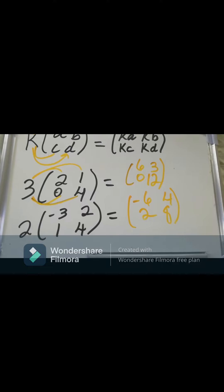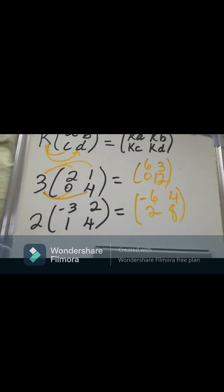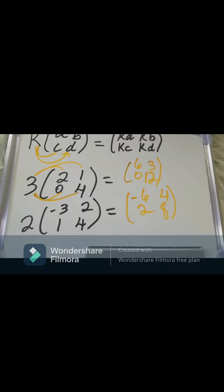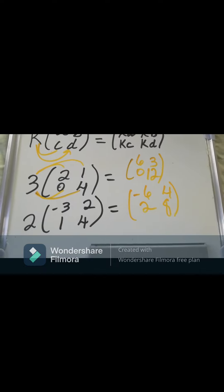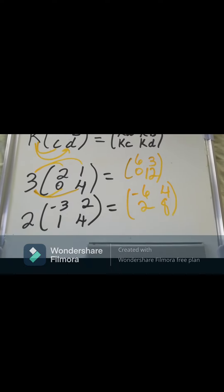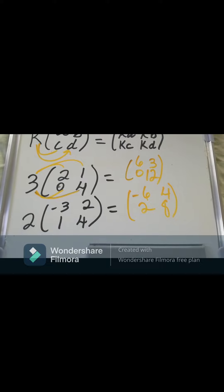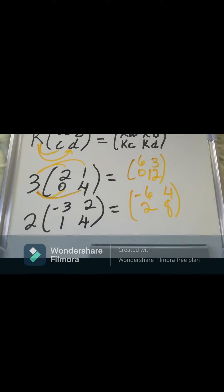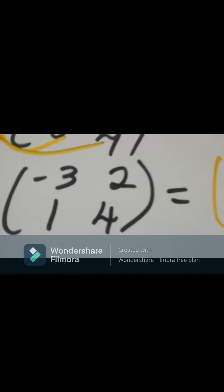We have 2 times minus 3, that's minus 6. 2 times 1, that is 2. 2 times 2, gives us 4. And 2 times 4, give us 8. Yes.